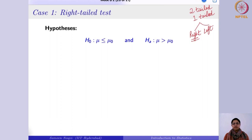In the two-tailed test, as the name suggests, we look at both directions. We are not just focusing on whether the population mean is greater than or less than the hypothesized value — we are saying it won't be the same as μ₀, it can go in either direction. That is the two-tailed test. Now let us first focus on the right-tailed test.